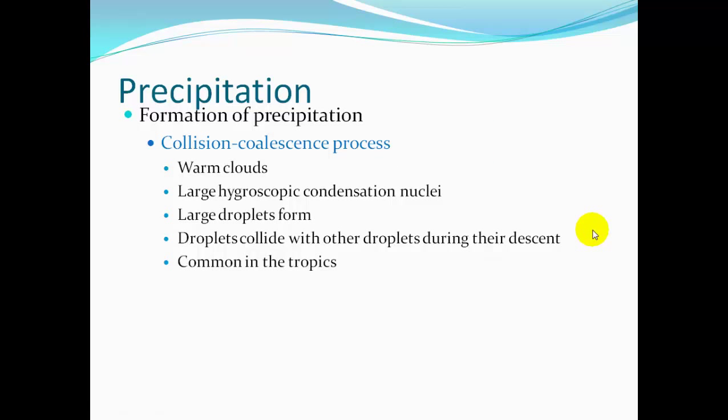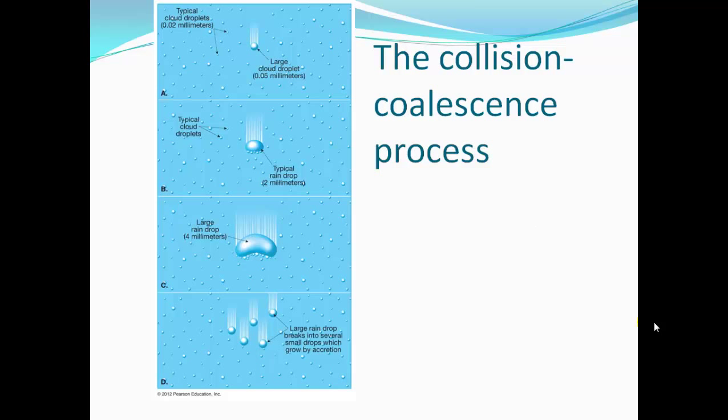The collision coalescence process applies to warm clouds with large hygroscopic condensation nuclei — like ocean salts here in Florida — which form large droplets. This is why raindrops in Florida are surprisingly large. The hygroscopic condensation nuclei cause large droplets. Droplets collide with other droplets during their descent — very common in the tropics. A large cloud droplet, as it falls, bumps into more cloud droplets, forming larger and larger droplets. If it gets too large, it might break apart but still fall as fairly large raindrops.